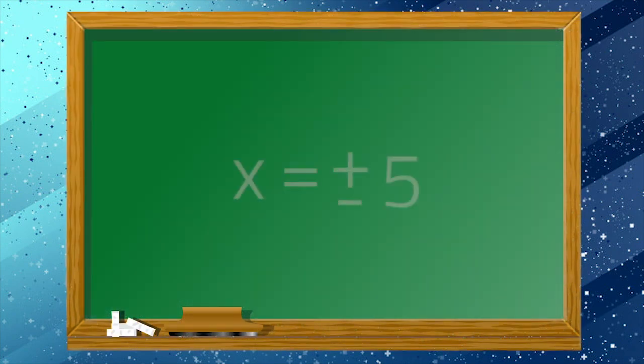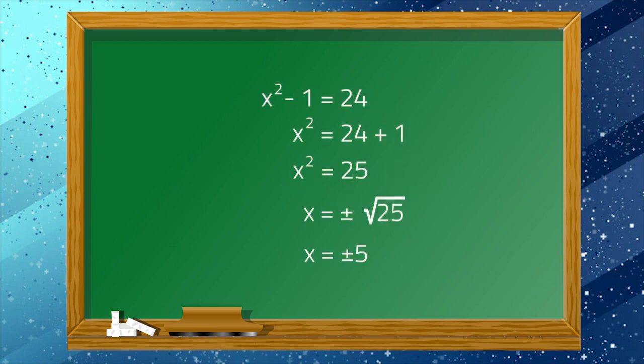You're doing great. I think you can try it on your own. Can you try solving these quadratic equations using the square root property? Grab your papers and pens to get the answers. Let's have x² - 1 = 24. What is the value of x in this equation? That's right! The answer is positive or negative 5. Take a look at our solution. Congratulations! You did great!